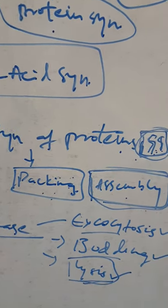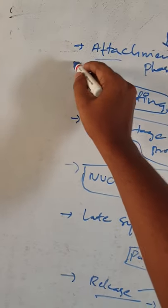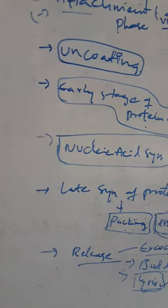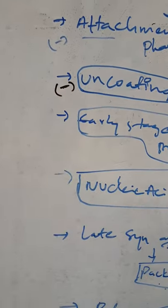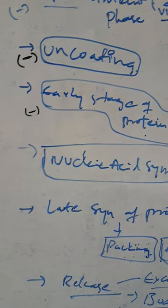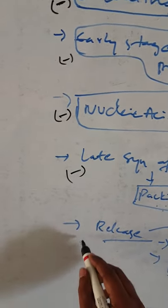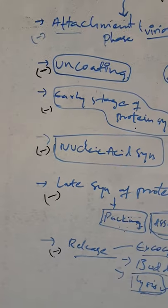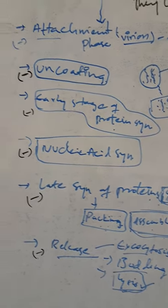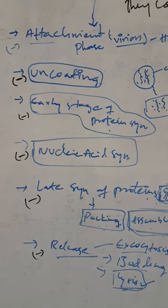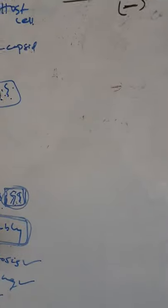So these seven stages — attachment, uncoating, early protein synthesis, nucleic acid synthesis, late protein synthesis, packing/assembly, and release — are all target sites. Antiviral drugs can inhibit the replication process at any point, preventing a single virion from converting into multiple virions. Let's draw a host cell to visualize this.